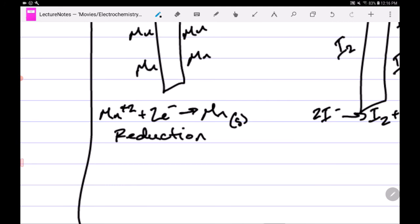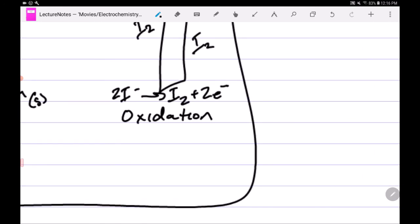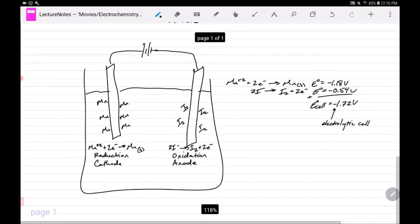Because this is the half-reaction for reduction, this is the cathode. And because this is where oxidation is happening, this is the anode. So basically, the only difference between a galvanic cell and an electrolytic cell is an electrolytic cell is non-spontaneous, requires energy in order to run.